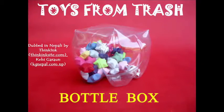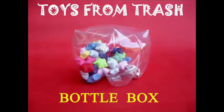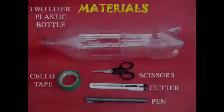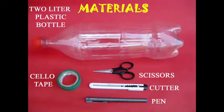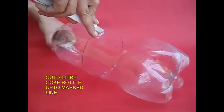We have a bottle of cocoa — a 2-liter plastic bottle — a coin, and a cutter.